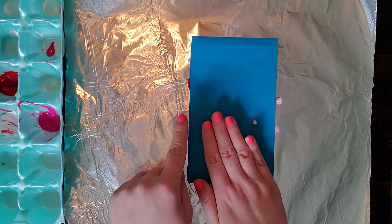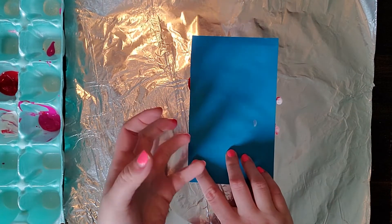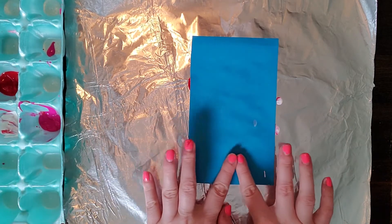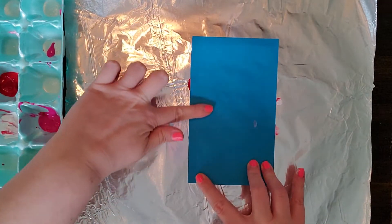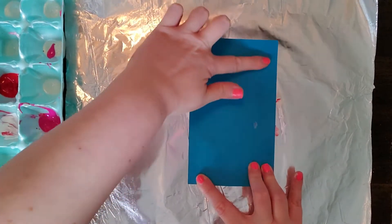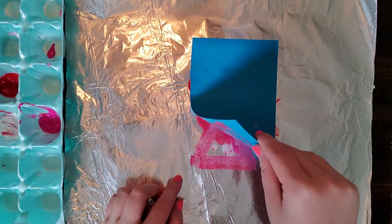And now you can see how if you globbed up the paint, it would just start to ooze out the sides. So that's why we don't want to put too much on there. So now that I think I have it pressed firmly, I'm going to peel it away.